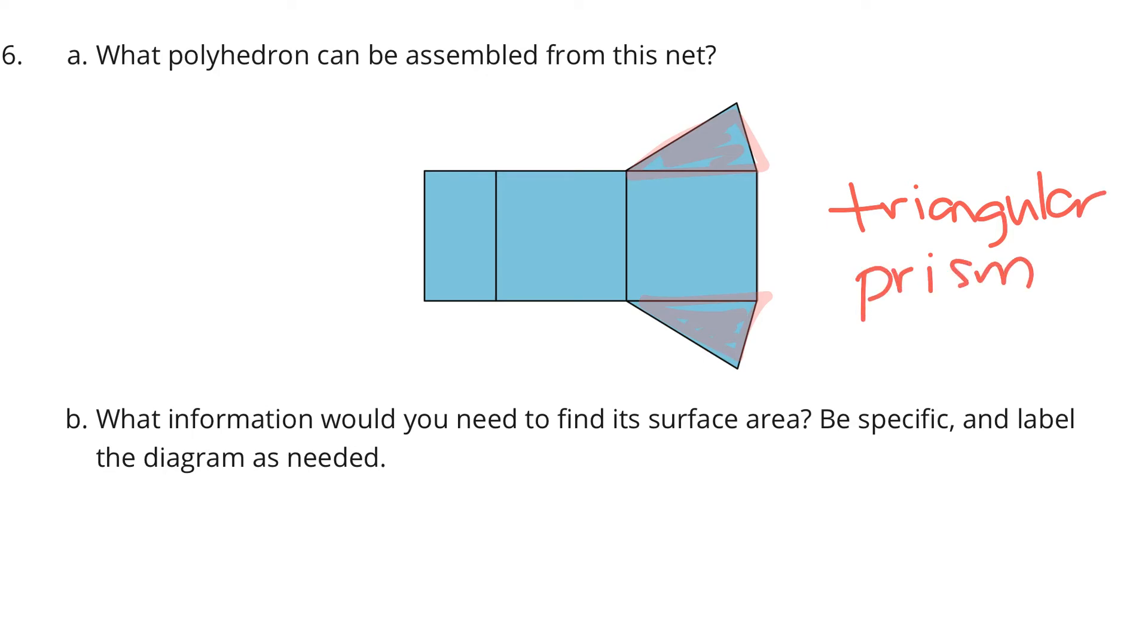And what information would we need to know? Well, the side lengths. We would need to know those lengths there for B. We would need this side here for C and C. We would need A here. We would need our base lengths and side lengths here, D. And we would also need to know the height of these triangles, which we'll just call E. You know those things? We can find the surface area, because they would enable us to find the areas of all the little pieces.